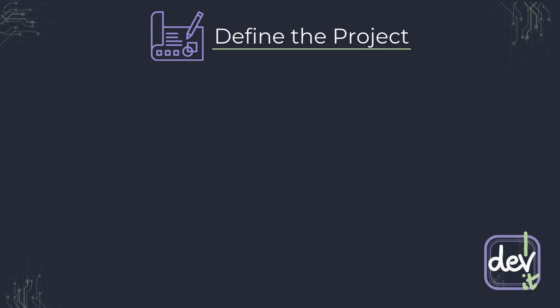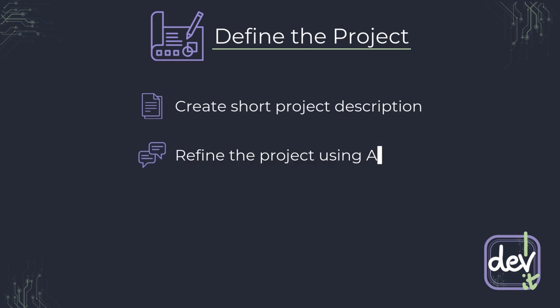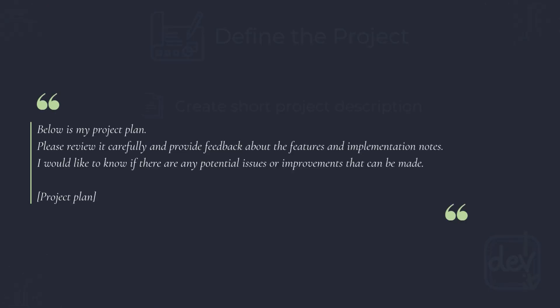I started with creating a short description of the application — defining its purpose and a few technical details like Python as the backend language and Svelte on the frontend. In the second step, I wanted to get more into details, so I used the new Claude thinking model to help figure that out. Notice how I frame this as feedback for my AI agent — that is key to getting the right kind of response.